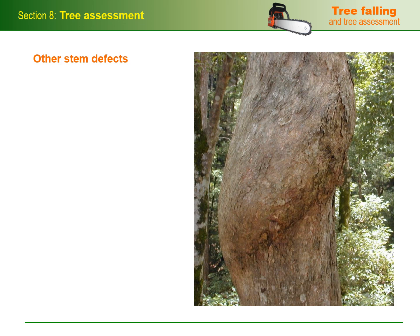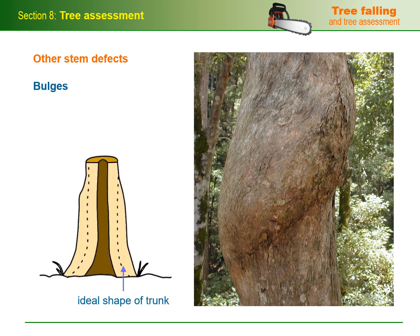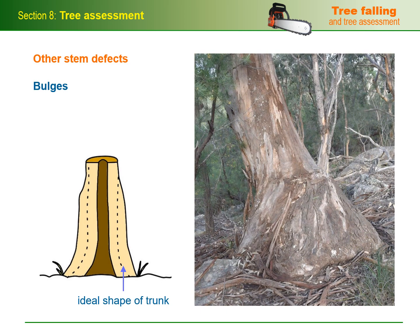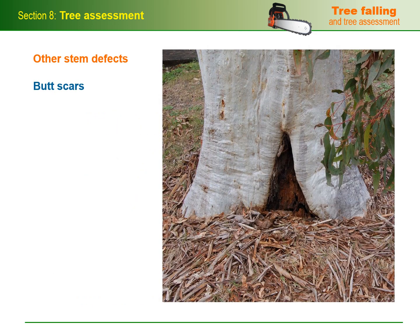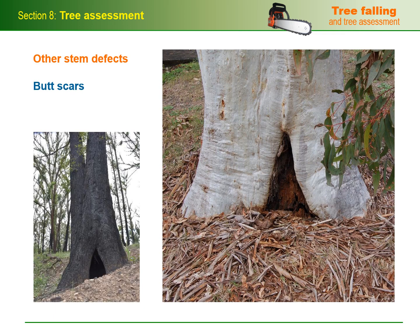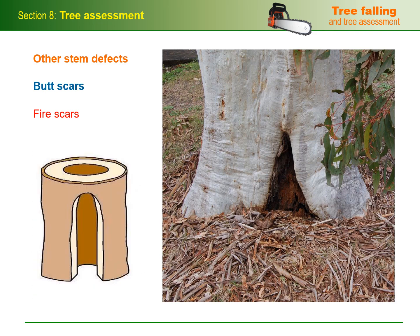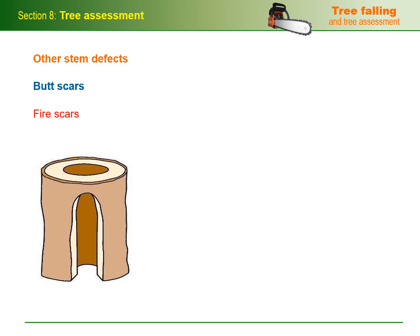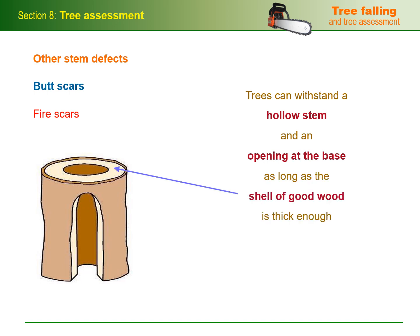We've already discussed various examples of stem defects, but here are a few more markers of underlying structural weaknesses in the stem. Bulges are enlarged or swollen areas of the stem that occur around regions of advanced fungal decay; they develop as the tree tries to strengthen the weakened area by building thicker growth rings around it. Note that not all species of fungi cause this response, so a tree could still suffer from extensive decay without showing a bulge. Butt scars appear as a triangular-shaped gap at the base of the tree — sometimes called fire scars — and the opening generally has a hollow behind it which may extend up through the trunk as a pipe. Trees can withstand a hollow stem and an opening at the base as long as the shell of good wood is thick enough and the opening is not too wide.